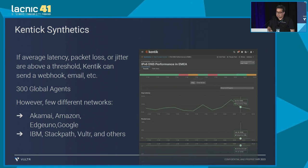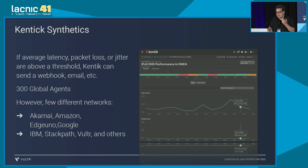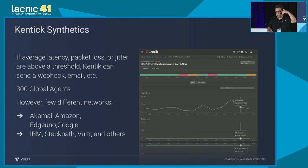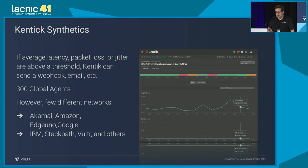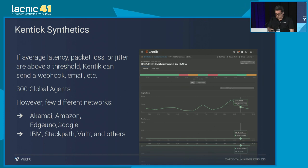We also used a tool called Kentic. We have 300 global agents. With them we measured the performance of our DNS, the latency, and we worked in several geographies with different BGP communities so that our peers or the peers of our peers would choose the best paths to the DNS. If they're in Europe, we want them to stay in Europe. If they're in South America, they should stay in South America. If they're in Brazil, they should stay in Brazil.